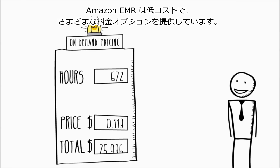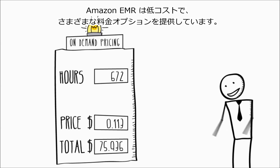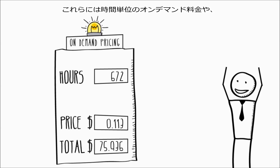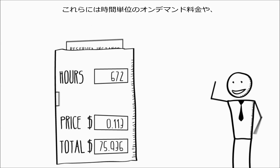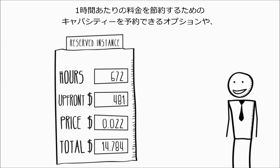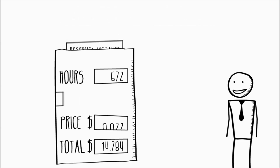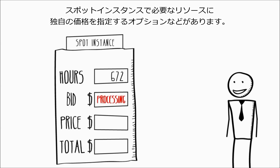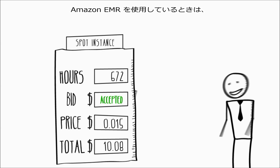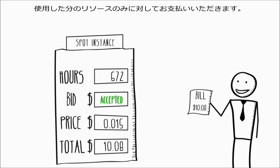Amazon EMR is low cost and provides a range of pricing options, including hourly on-demand pricing, the ability to reserve capacity for a lower hourly rate, or name your own price for the resources you need with spot instances. And when you are using Amazon EMR, you pay only for the resources that you use.